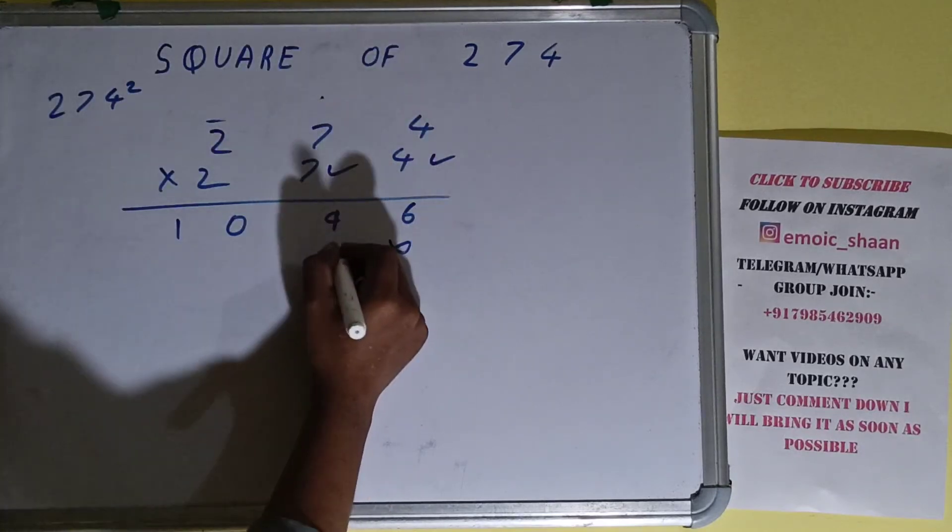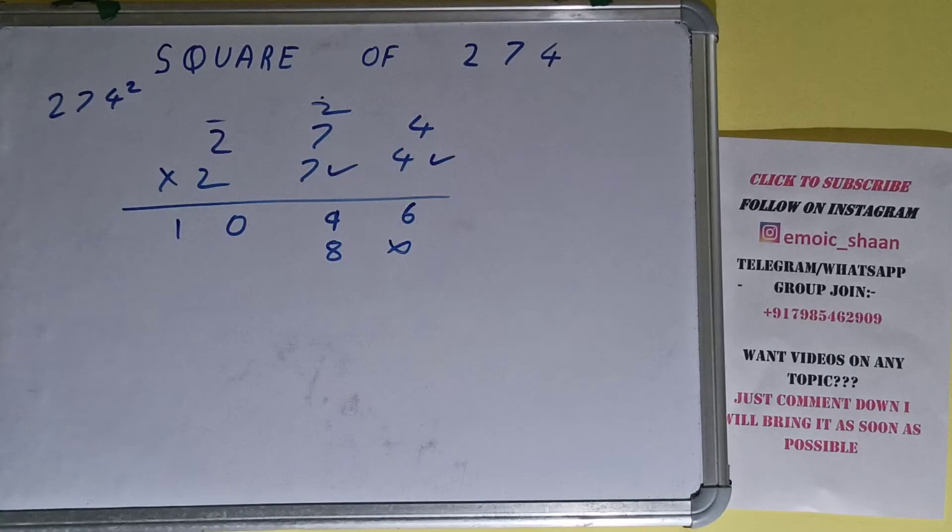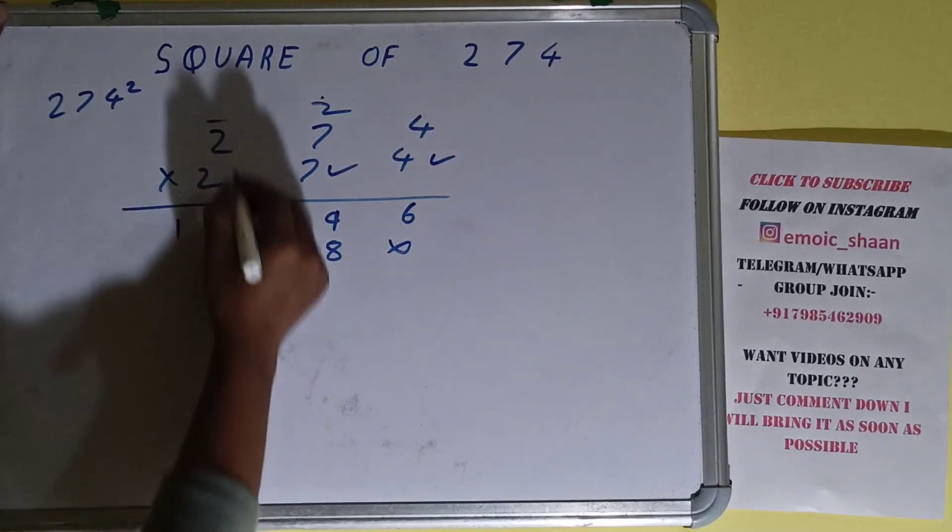Okay, now this 7. 7 times 4 is 28, 2 carry. 7 times 7 is 49 plus 2 is 51, 5 carry.